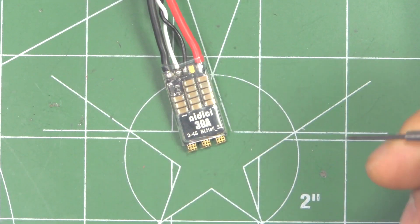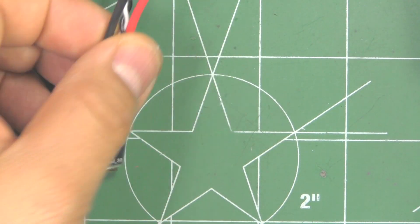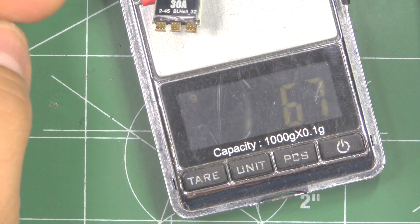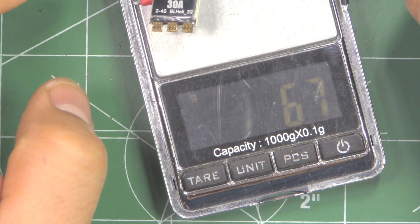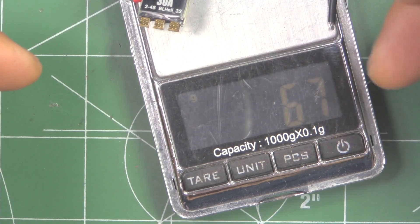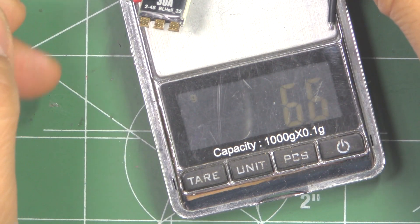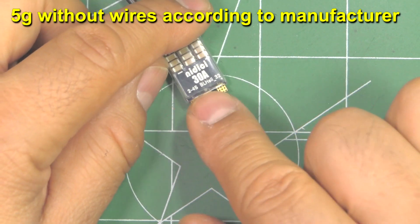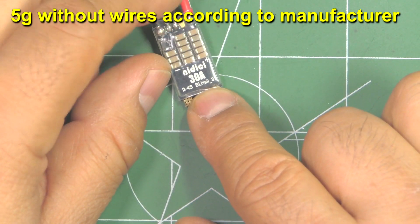As I mentioned, this is a pretty small ESC, so let's see what it weighs. With those two wires and the connector for the FC on the signal side, it's like 6.6 grams, so that's pretty light. I don't think you can get any lighter and still get a 30 amp rated ESC.